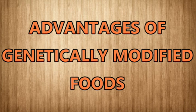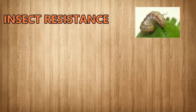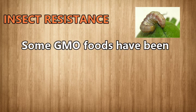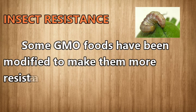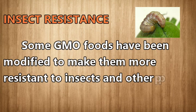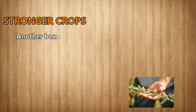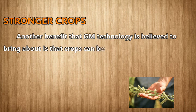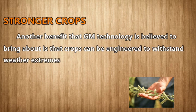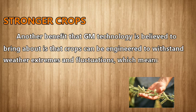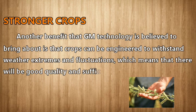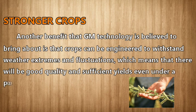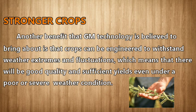Advantages of genetically modified foods. Insect resistance: some GMO foods have been modified to make them more resistant to insects and other pests. Stronger crops: another benefit that GM technology is believed to bring about is that crops can be engineered to withstand weather extremes and fluctuations, which means there will be good quality and sufficient yields even under poor weather conditions.